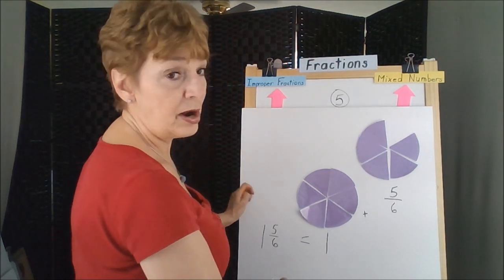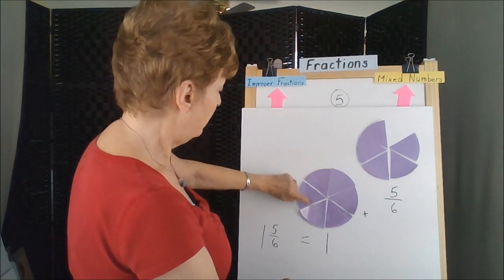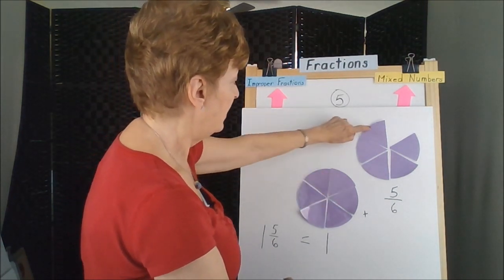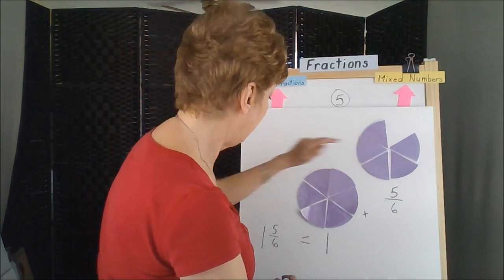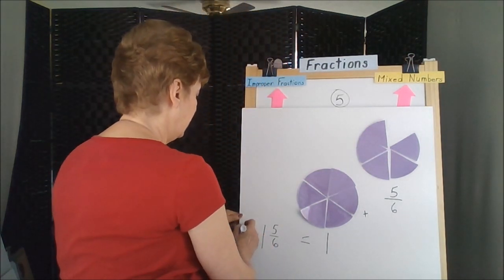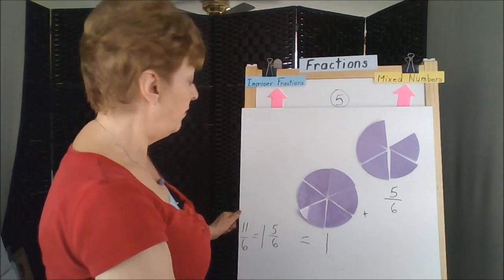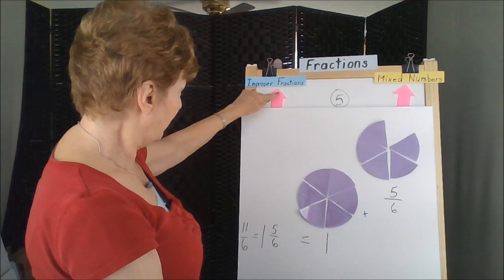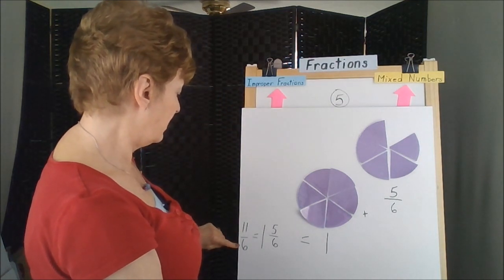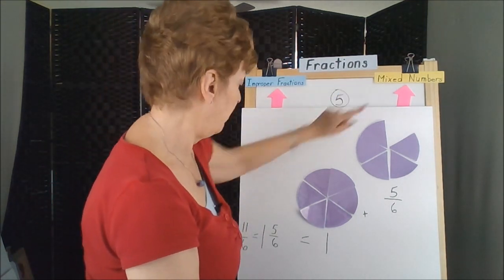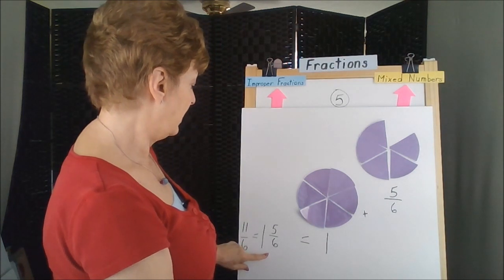And if we counted our pieces, one, two, three, four, five, six, seven, eight, nine, ten, eleven, this would be eleven sixths. So we've gone from our improper fraction eleven sixths to our mixed number.